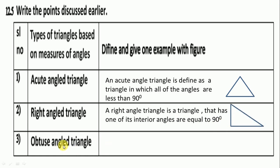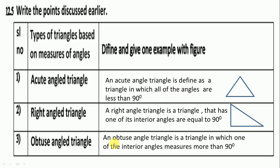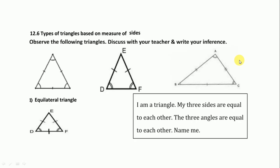An obtuse angle triangle is a triangle in which one of the interior angles measures more than 90 degrees. Here is the example of an obtuse angle triangle. Next we go to 12.6.